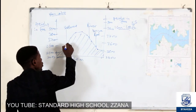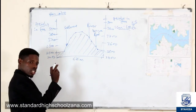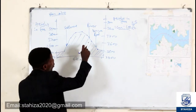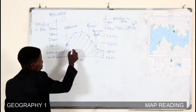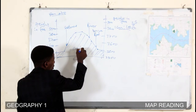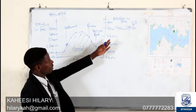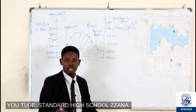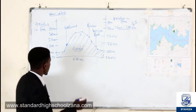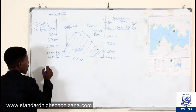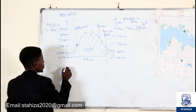The arrows you put must touch the ground but not enter the ground, and the cross section must be shaded. Note that you never put the scale on the cross section itself. That is how we draw a cross section. Now we are going to see how we can calculate the vertical exaggeration.